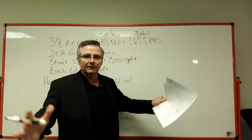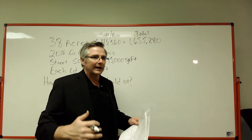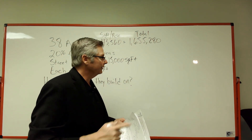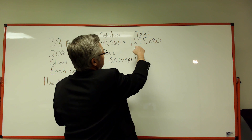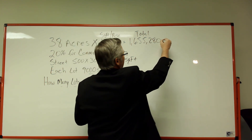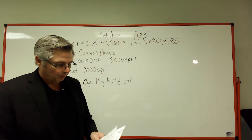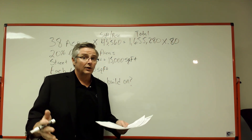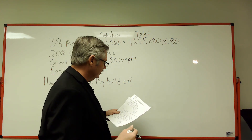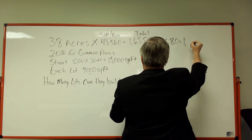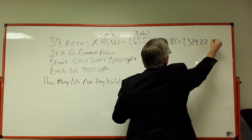So that's how big that piece of land is. Now we've got to break it down and take some of that out for common areas, parks, and a street to see how much we've got to build with. They say 20% is going to be used for common areas, so I'm going to take 1,655,280 square feet and multiply it by 0.80 — because I've got 80% left to build on. That gives me a total of 1,324,224 square feet.